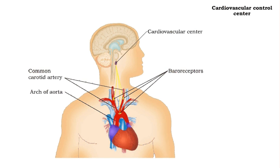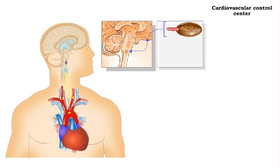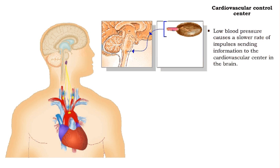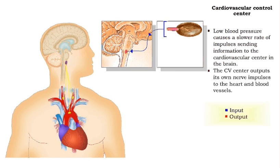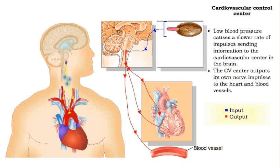Baroreceptors send information to the cardiovascular center in the medulla oblongata in the brain. When blood pressure drops, the slower rate of impulses from the baroreceptor conveys this disruption to homeostasis to the CV center. The CV center sends its own nerve impulses out to the heart and many of the blood vessels.